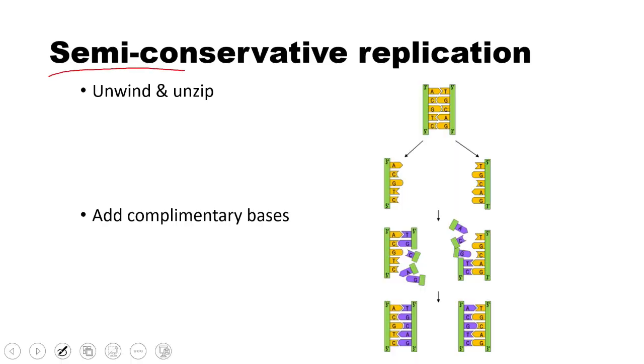Let's talk about the process of semi-conservative replication. This is just the basics. There's a lot more detail we can get into, but I want to start here. First we need to unwind and unzip the DNA, and that's done by the enzyme helicase.